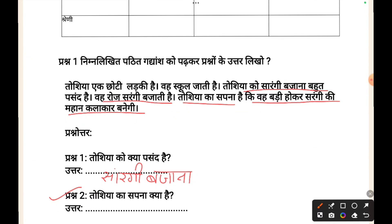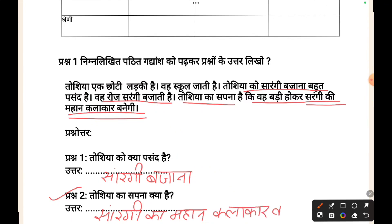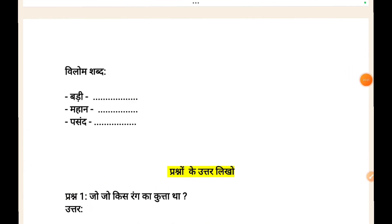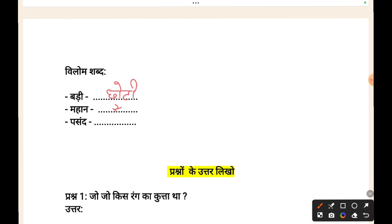Next: Toshia ka sapna kya hai? Badao kawakar saraangi ki mahan kalakar banna — saraangi ki mahan kalakar banna. Next question: bilom shabd (antonyms) — badai toh ho jayegi chhoti, mahan — saadaran, paasan — na paasan.